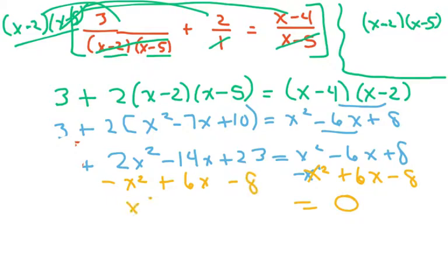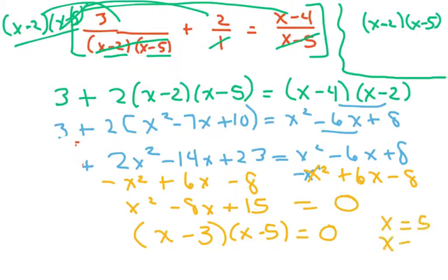And we're going to get x squared minus 8x plus 15 equals 0. Now I'm going to factor this again, x minus 3 times x minus 5 equals 0. So you would know that here, we're going to get x equals 5 and x equals 3.